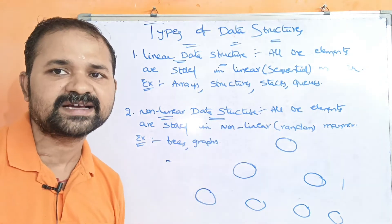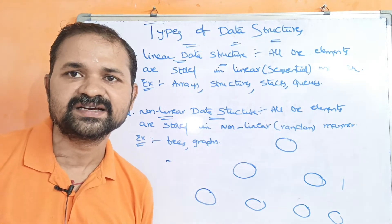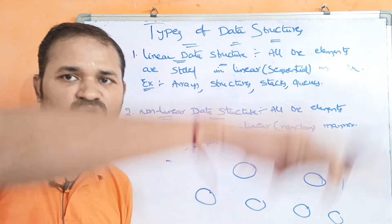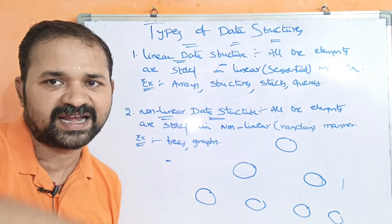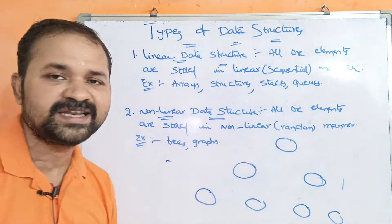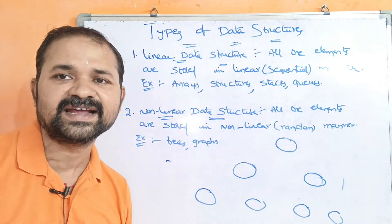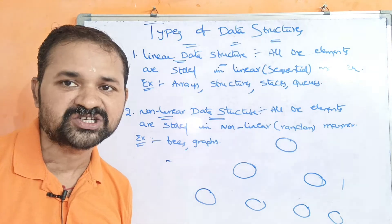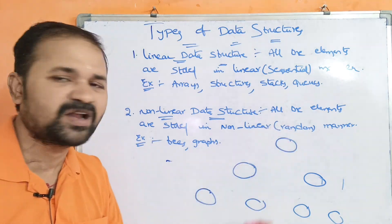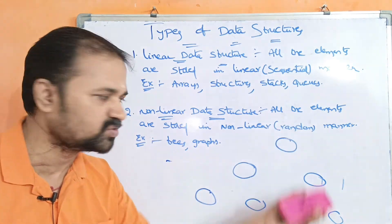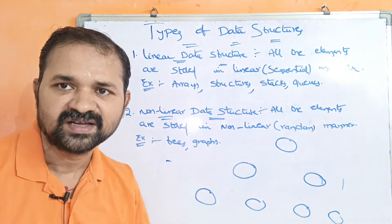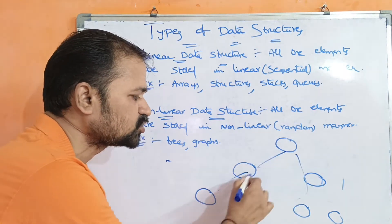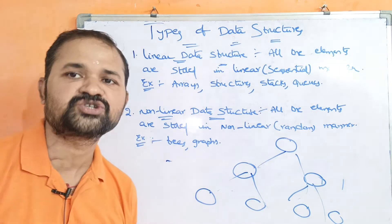So linear data structure ante yandhi data na yandhi linear ga store outhi, one by one sequential ga store outhi, one level. Various non-linear data structure ante yandhi data na yandhi non-linear ga store outhi undhi, random fashion lo store outhi undhi, and level by level — level one lo ko ni nodes yandhi, level two lo ko ni nodes yandhi, level three lo ko ni nodes yandhi. So aavithi nga data na yandhi store outhi undhi.